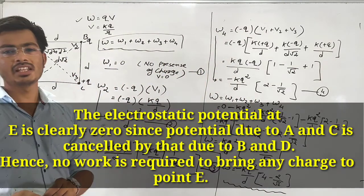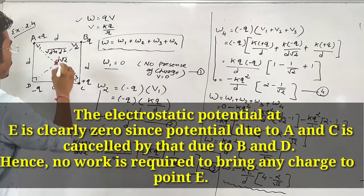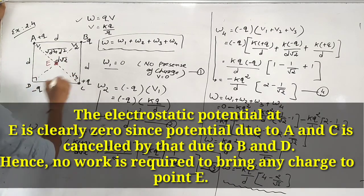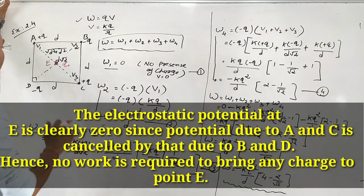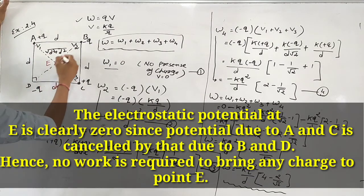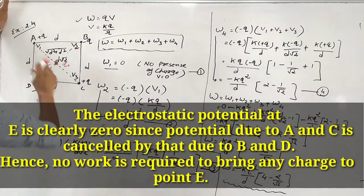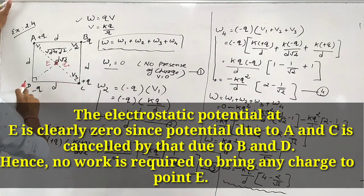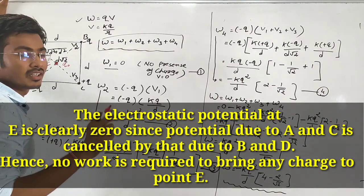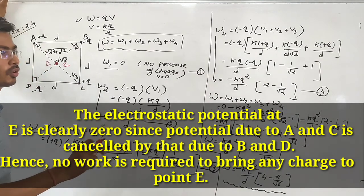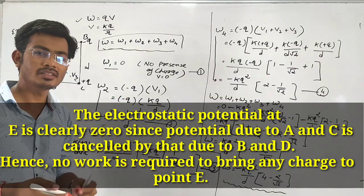Now for the second part: a charge Q0 is brought to the center point E of the square. From symmetry, all four distances from the center to the corners are equal. The charges at the corners are plus Q, minus Q, plus Q, minus Q. Because of this symmetry they cancel each other out, so the total potential at the center is zero. Therefore the extra work needed to bring Q0 to the center is zero.